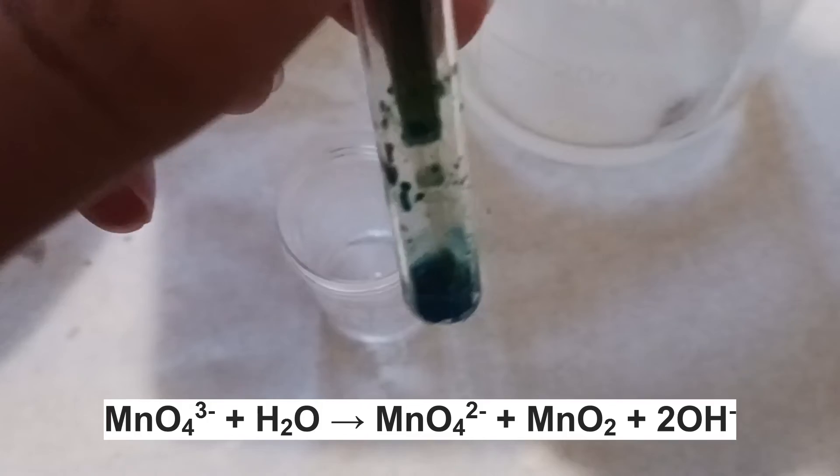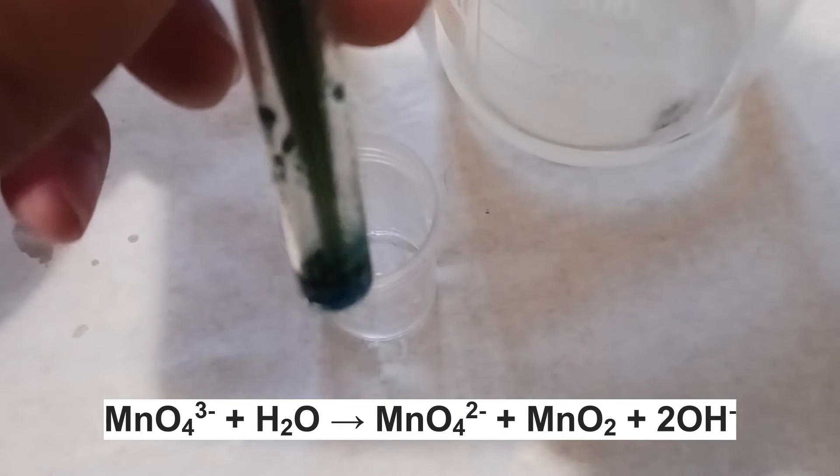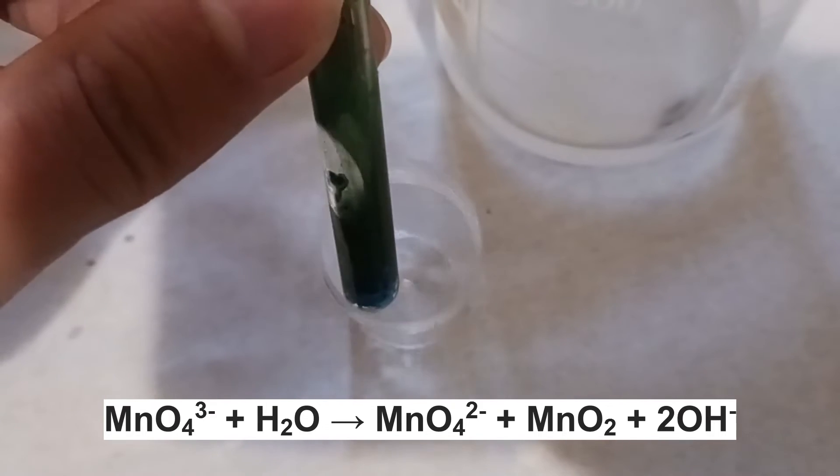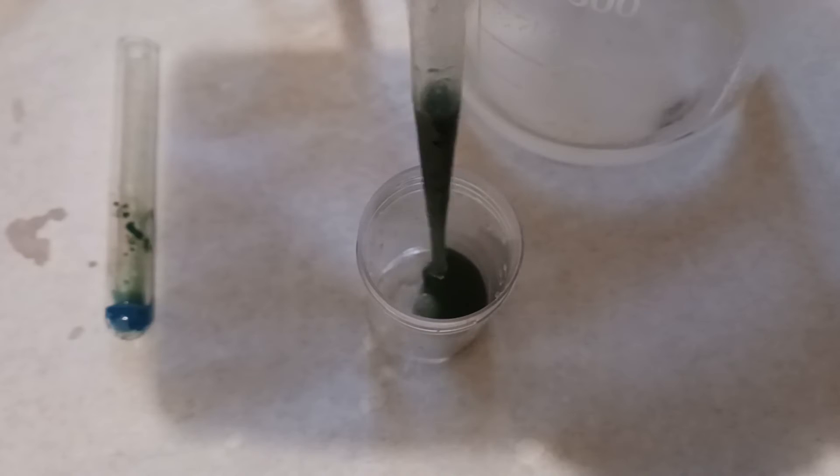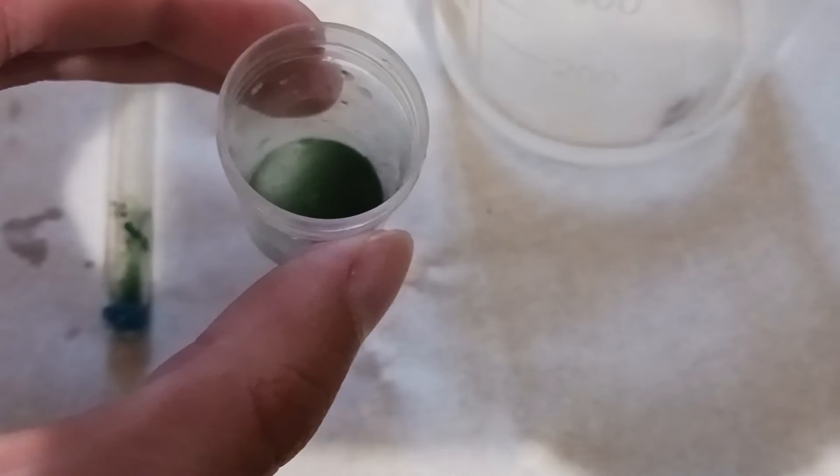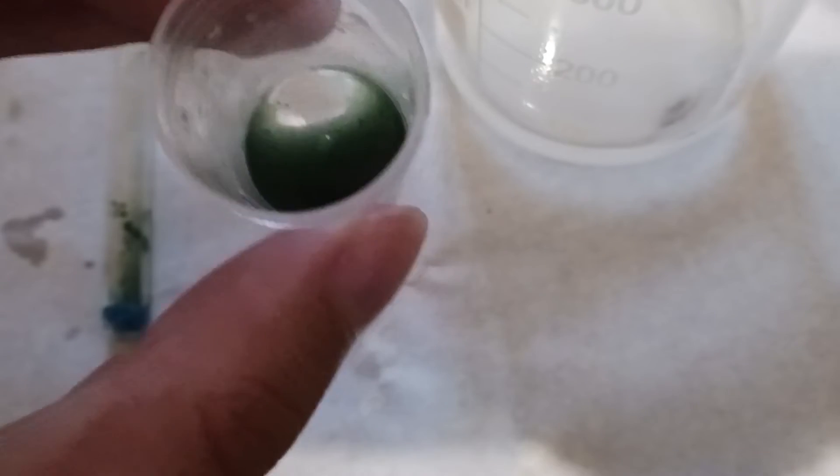When water has been added, it turns it into sodium manganate, which is the green form in the plus-6 state. This reaction also produces MnO2, which is probably the insoluble particles we can see in solution.